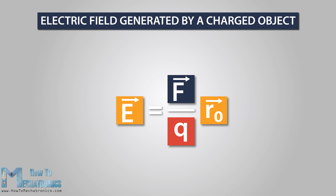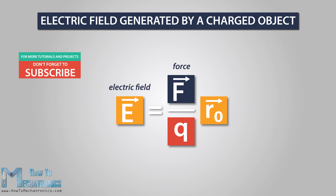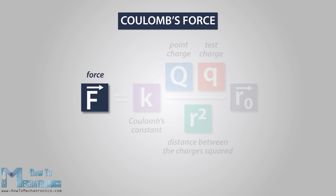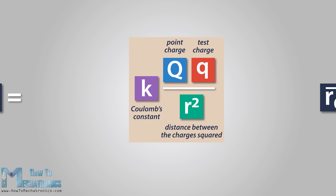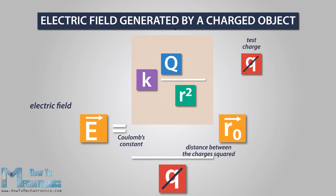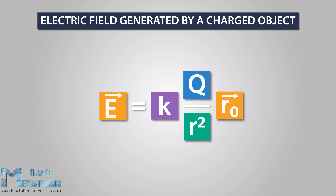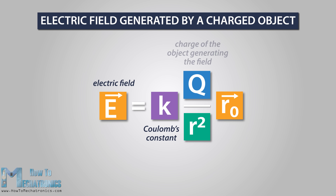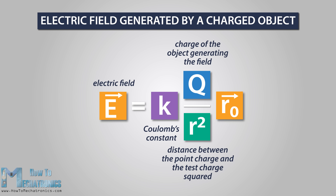Now we can measure the electric field. The electric field generated by a charged object is the electric force between the object and the test charge divided by the magnitude of the test charge. Coulomb's law will help us find the force. In place of capital F we will use the Coulomb's law equation. We can notice that the small q appears twice in the equation, so it cancels out and we are left with an equation that includes only the point charge. Finally, the strength of the electric field created by a point charge is equal to the Coulomb's constant multiplied by the charge of the object generating the field, divided by the distance between this object and the test charge squared.